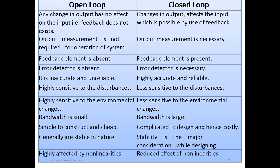Open loop is highly sensitive to environmental changes while closed loop is less sensitive. Open loop has a small bandwidth; closed loop has a large bandwidth. Open loop is simple to construct and cheap; closed loop is complicated to design. Open loop systems are generally stable in nature, while stability is a major consideration when designing a closed loop or feedback control system. Closed loop systems also have a reduced effect of non-linearities compared to open loop.